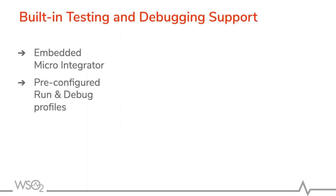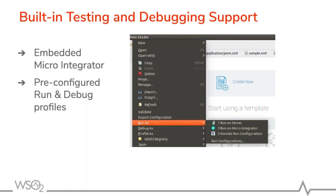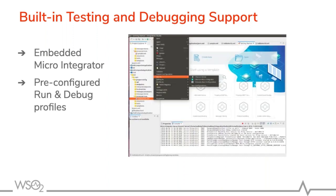We wanted to improve the experience from development all the way to the end, so we have provided built-in testing and debugging support. This was made possible by introducing the Micro Integrator profile as an inbuilt server. You just click on your project and select to run it on the Micro Integrator. You'll see the Micro Integrator profile has started and you can invoke and test your services without going out of Integration Studio.